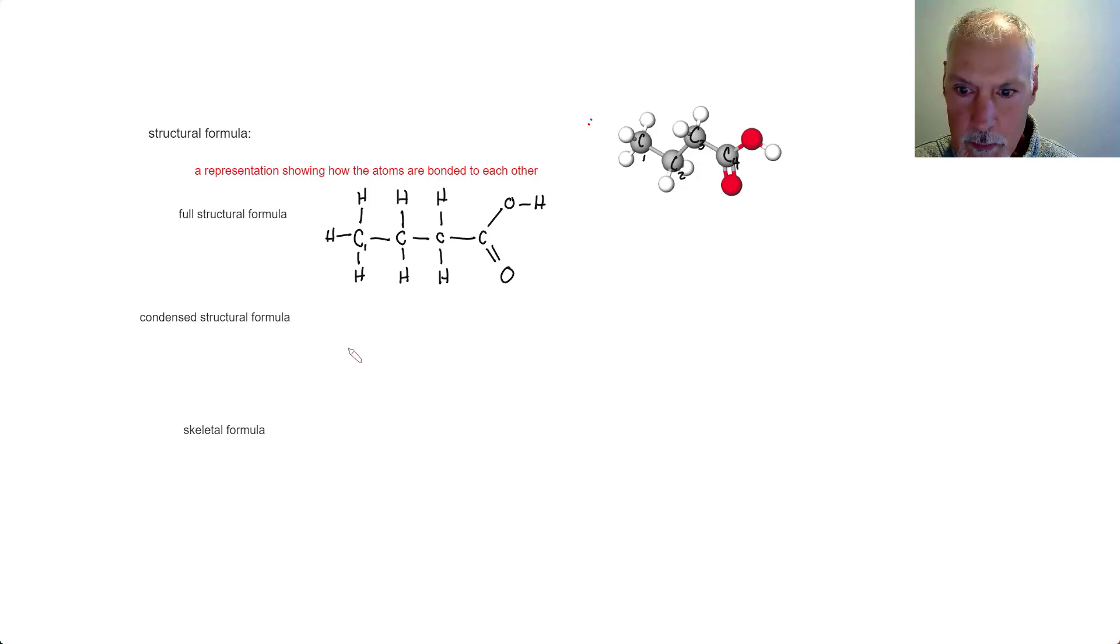A condensed structural formula takes this and puts it in a smaller space. So again, starting at carbon number one, I have three hydrogens attached to it. Moving on to carbon number two, it has two hydrogens attached to it. The next carbon number three, again, two hydrogens. And the last carbon is connected to an oxygen and an O-H combination. So this takes up less space but conveys the same information.